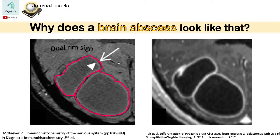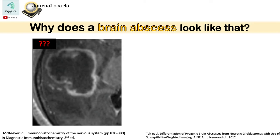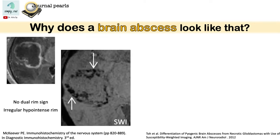So why is this dual rim sign useful? If you look at a rim-enhancing lesion, you might include an abscess as part of your differential diagnosis. Aside from the DWI and the appearance of the margin on the contrast study, we also look for other findings to support our differential diagnosis of abscess. So let us look at the SWI. On SWI, the hypo-intense rim is very irregular as compared to the smooth and complete hypo-intense rim of an abscess.